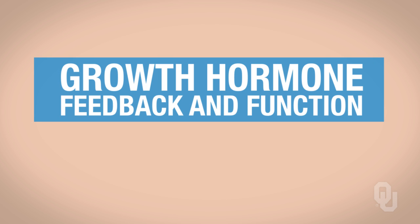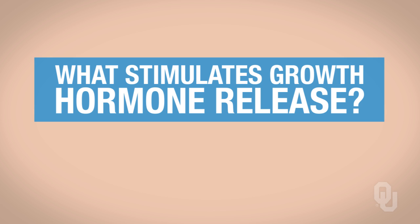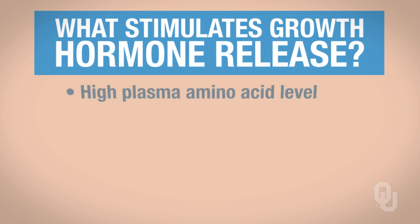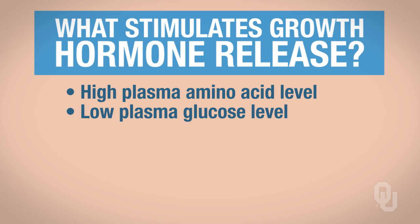In this segment, you will learn how growth hormone—a peptide hormone—is synthesized and secreted, and how its synthesis and secretion is turned off. To begin, let's think about what stimulates growth hormone release. If you had a high plasma amino acid level and a low plasma glucose level, these are two things that could stimulate growth hormone synthesis and secretion.